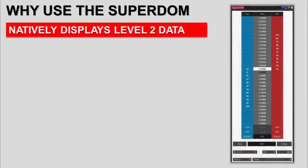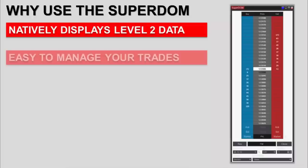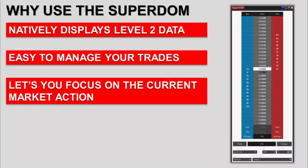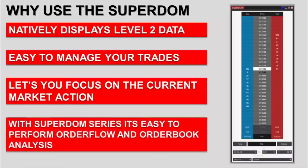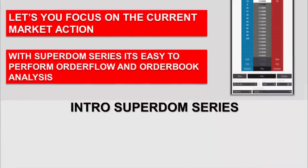So, why use the SuperDOM? The SuperDOM natively displays Level 2 data if your data package has it. It's also easy to manage trades with very few clicks. The DOM is the now — it's what's happening now in the market, so it lets you focus on the current market action. In conjunction with the SuperDOM series, it's easy to perform order flow and order book analysis, and it can be equally visual as a chart. Since NinjaTrader 8 was released, we looked at the opportunities the new SuperDOM presented and started to develop the SuperDOM series.